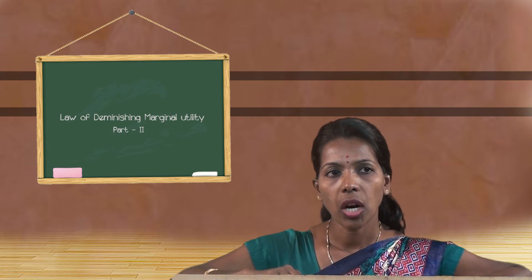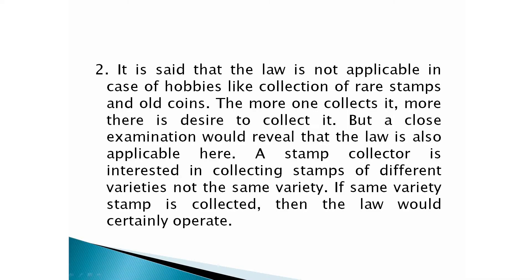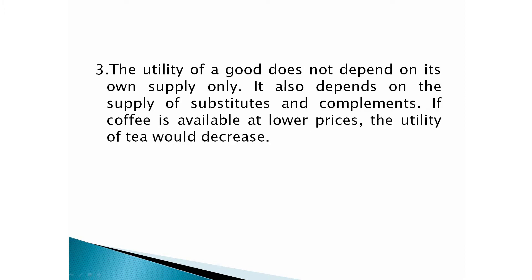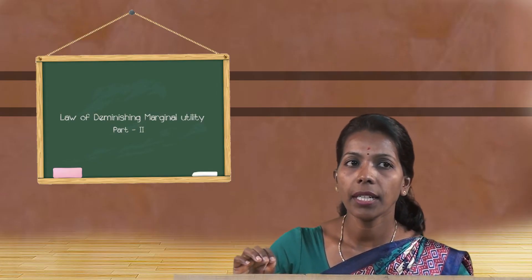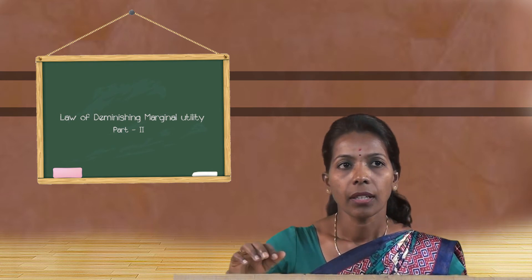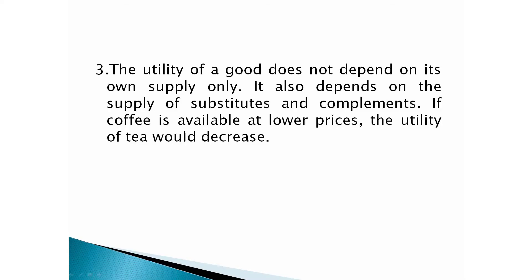The law is applicable only to normal human beings. Second, the law is not applicable in the case of hobbies like collecting rare stamps and old coins — the more stamps you collect, the more utility and satisfaction you get. Therefore, it is not applicable for rare collections. Third, the law is not applicable in the case of substitute or complementary goods. For example, if coffee is available at lower prices, the utility of tea decreases. So it depends upon the supply of substitute or complementary goods.